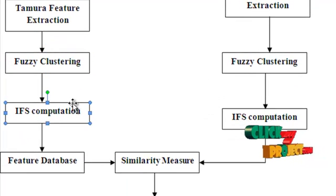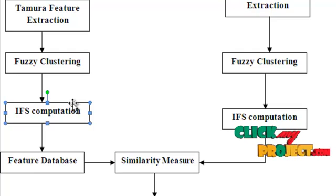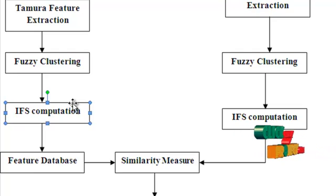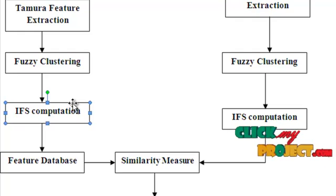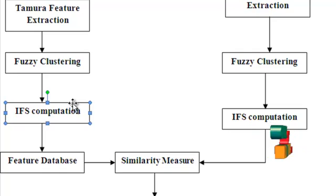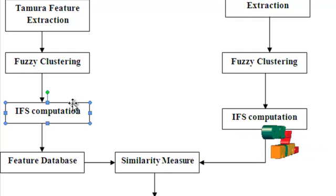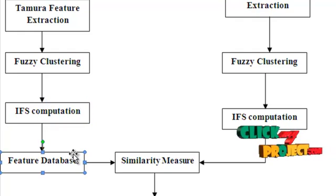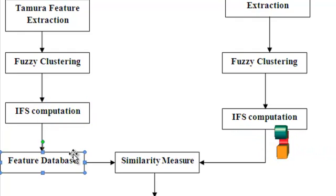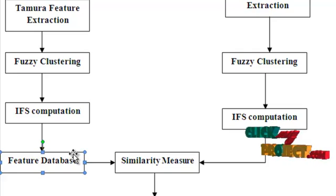Following this clustering, the next block is IFS computation. During the clustering process, the membership degree for each element is computed. But here we also consider the non-membership degree — that is, the hesitation degree — which is also computed and added to the feature vector. The image database is now converted into a feature database, so that we can achieve dimensionality reduction.